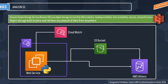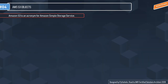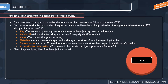AWS S3 is a web service that lets you store and retrieve data in an object store via an API reachable over HTTPS. When you have an object, the key is basically a URL accessible over the HTTPS protocol. You can store any kind of data — images, documents, binaries — as long as a single object does not exceed five terabytes. An object contains: a key, which is the name you assign to an object used to retrieve it; and a version ID — within a bucket, a key and version ID together uniquely identify an object, meaning there can be multiple versions of the same object.